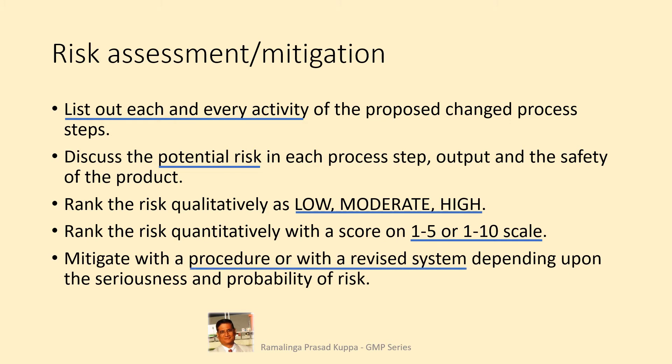Mitigate with a procedure or with a revised system depending upon the seriousness and probability of risk. By this exercise you will know the classification of risk. If the risk is low or with a low score, the mitigation plan may be to have precautions and training on understanding of the operation. If the risk is rated as moderate, the existing procedure — that is the SOP — may be revised to achieve the mitigation goal. If it is rated as high, a detailed system may be proposed for mitigation. In FMECA-type evaluation, you can have a score for low, moderate, and high classification based on the multiplication product of S, P, and D.